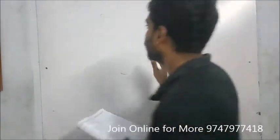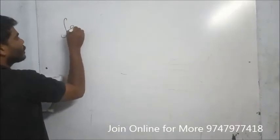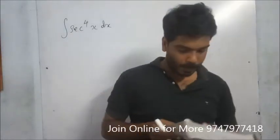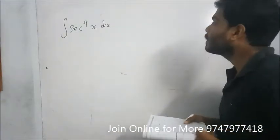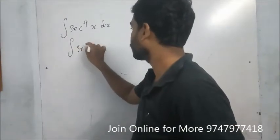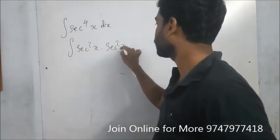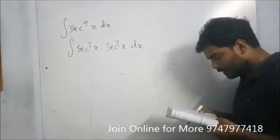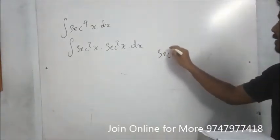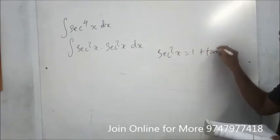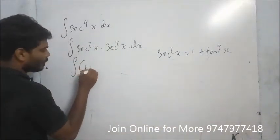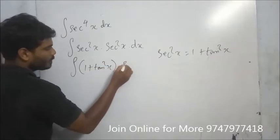Integral of sec⁴x dx. We note that sec⁴x equals sec²x times sec²x, and the identity 1 plus tan²x equals sec²x. So the integral becomes the integral of (1 plus tan²x) times sec²x dx.